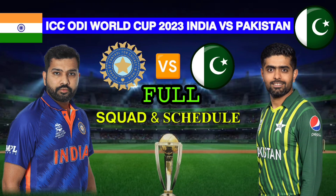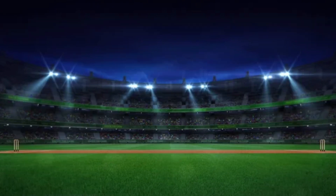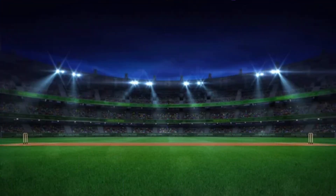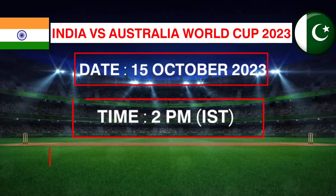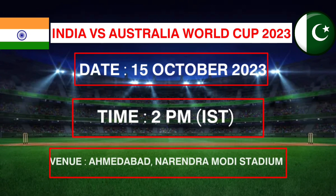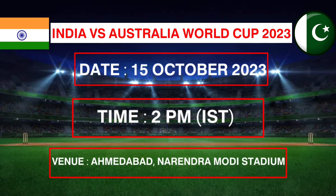ICC ODI World Cup 2023 India vs Pakistan: both team full squad and schedule. Date: 15 October 2023, Time: 2 PM Indian Standard Time, Venue: Ahmedabad, Narendra Modi Stadium.